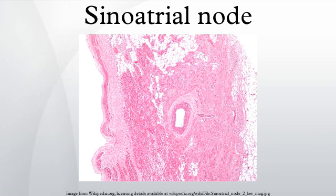The sinoatrial node is the impulse-generating tissue located in the right atrium of the heart, and thus the generator of normal sinus rhythm. The sinoatrial node is a group of cells positioned on the wall of the right atrium, near the entrance of the superior vena cava. These cells are specialized cardiomyocytes. Though they possess some contractile filaments, they do not contract robustly.